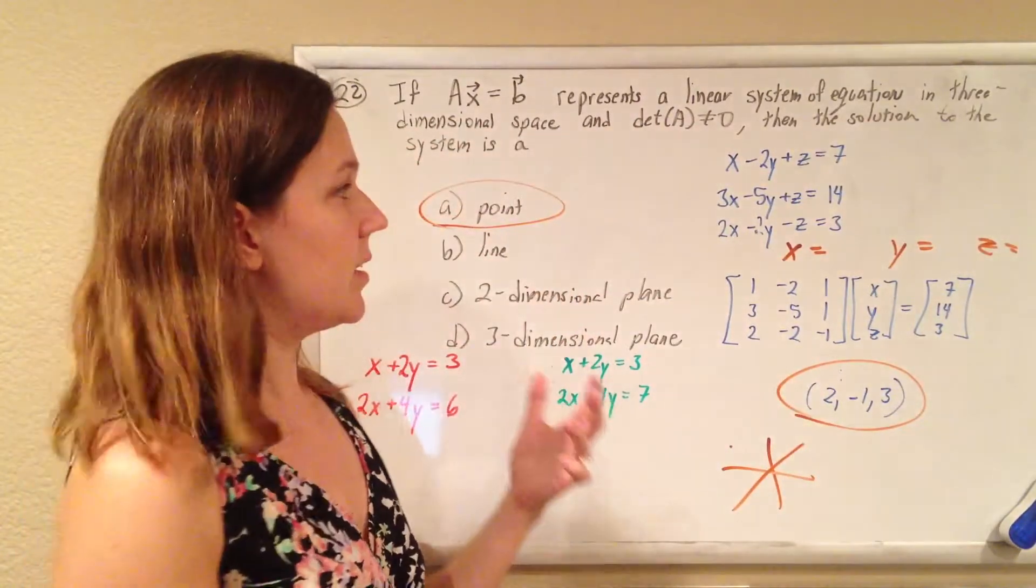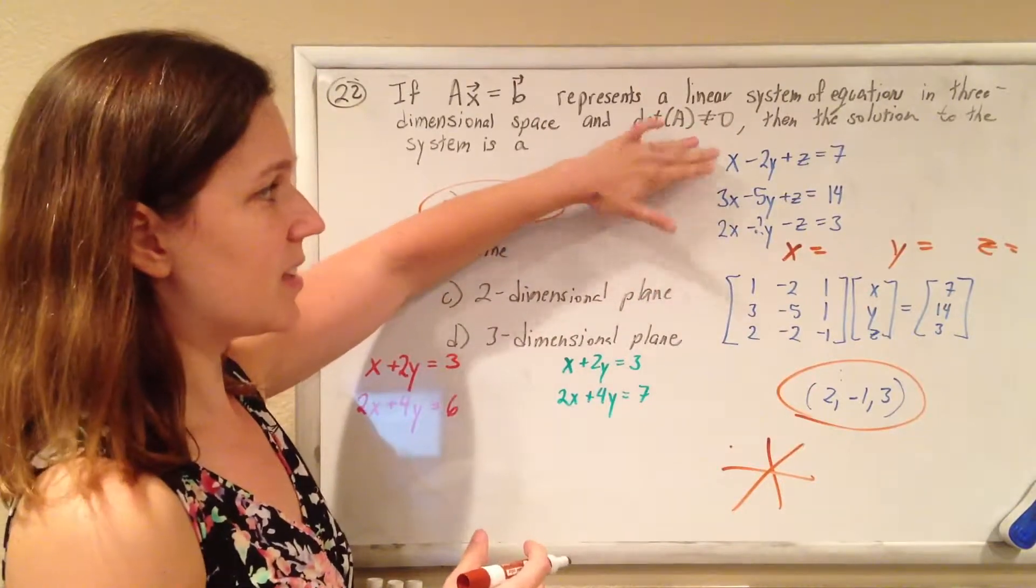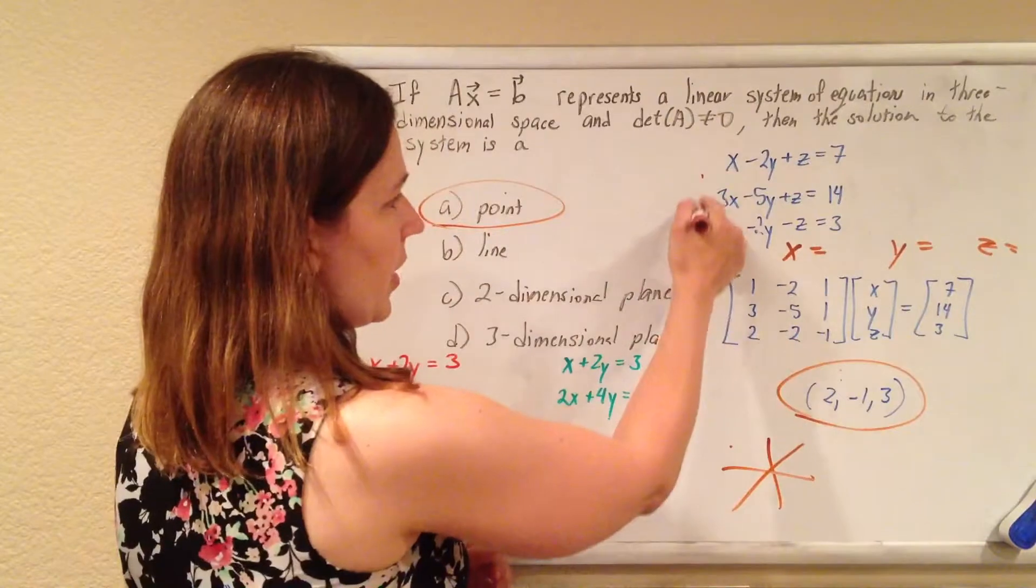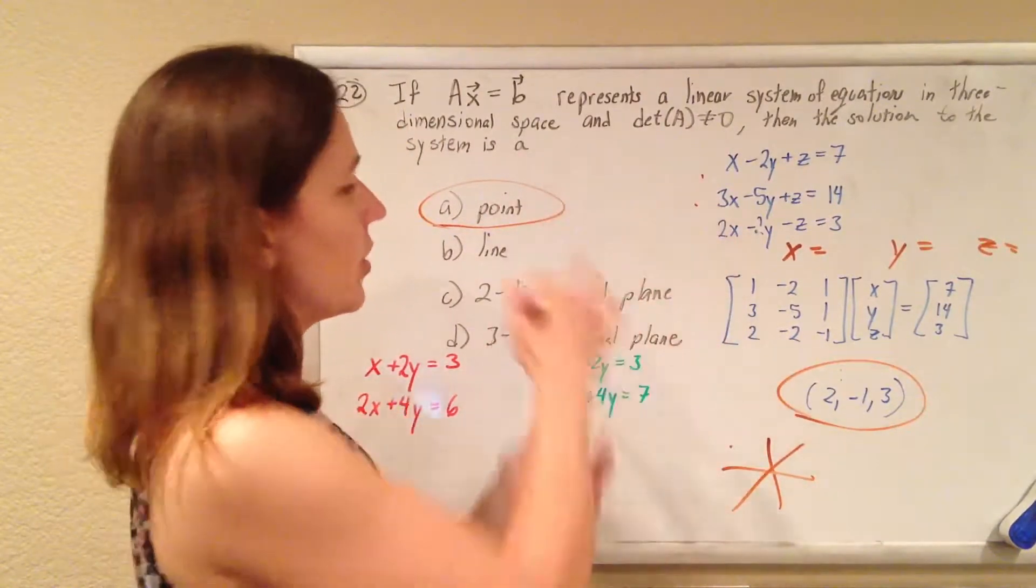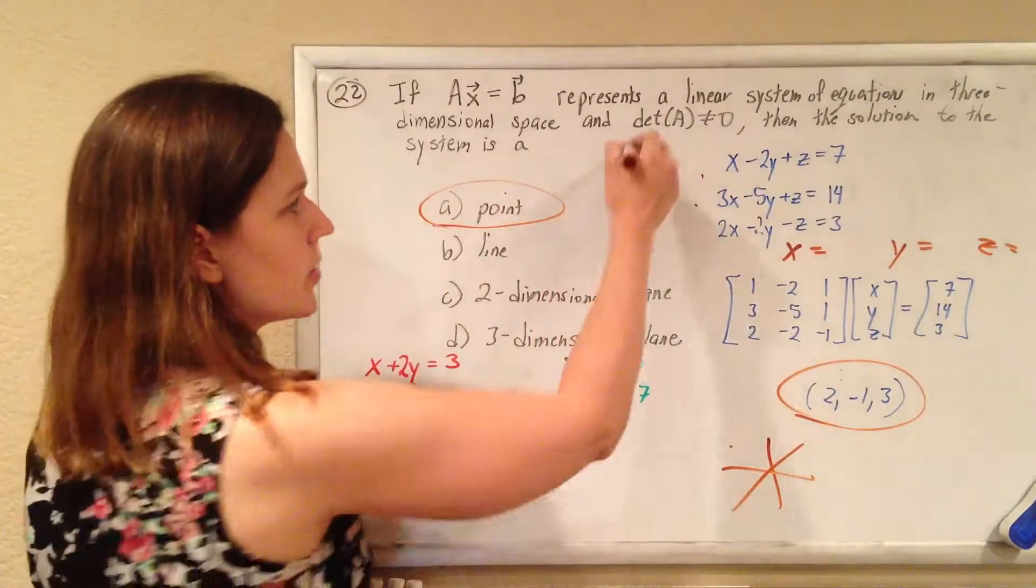We don't do a lot of it in high school algebra, but what these represent are planes. These are the plane in three-dimensional space, and these three planes are intersecting at a point. Now, they have to tell us though,